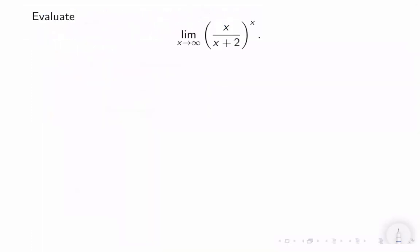Let us evaluate the limit of (x over x plus 2) raised to the x as x approaches infinity. The limit of the base x over (x plus 2) is 1, since they have the same degree and the leading coefficients are both 1. The exponent goes to infinity, so the form is 1 raised to infinity, which is an indeterminate form.